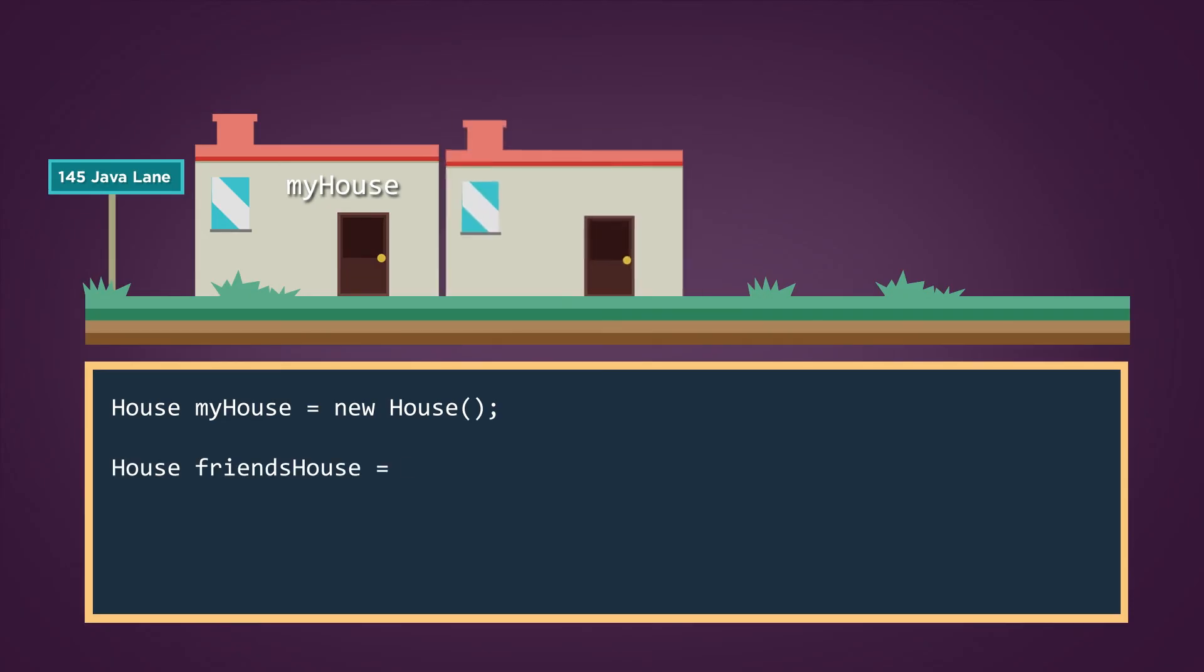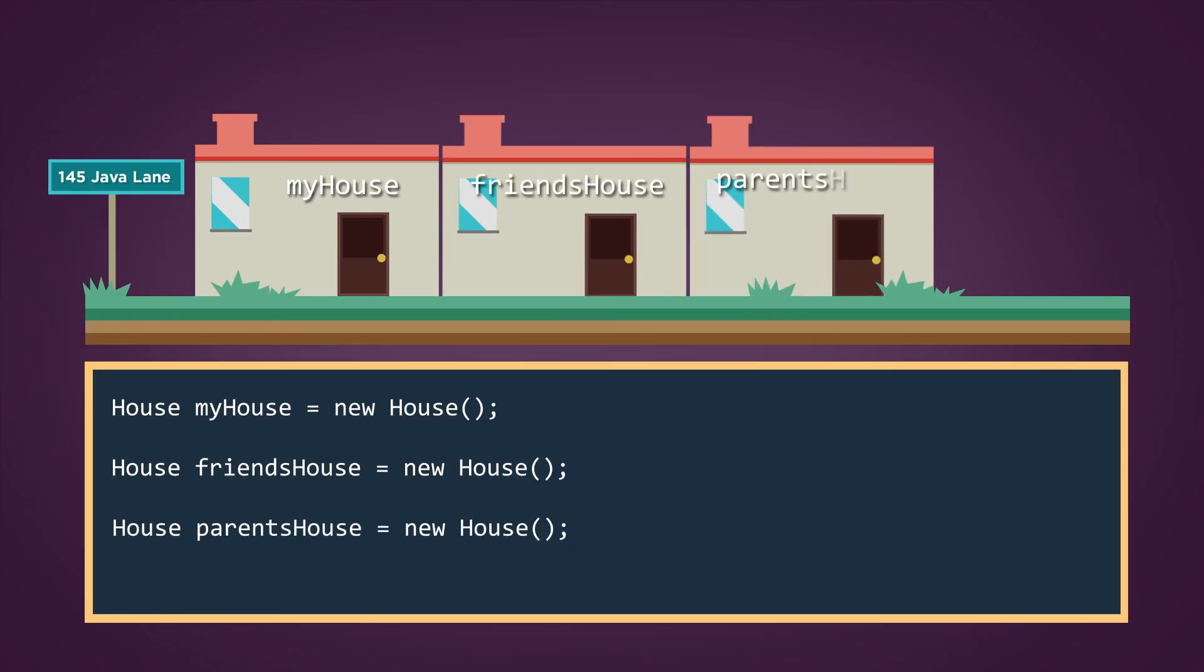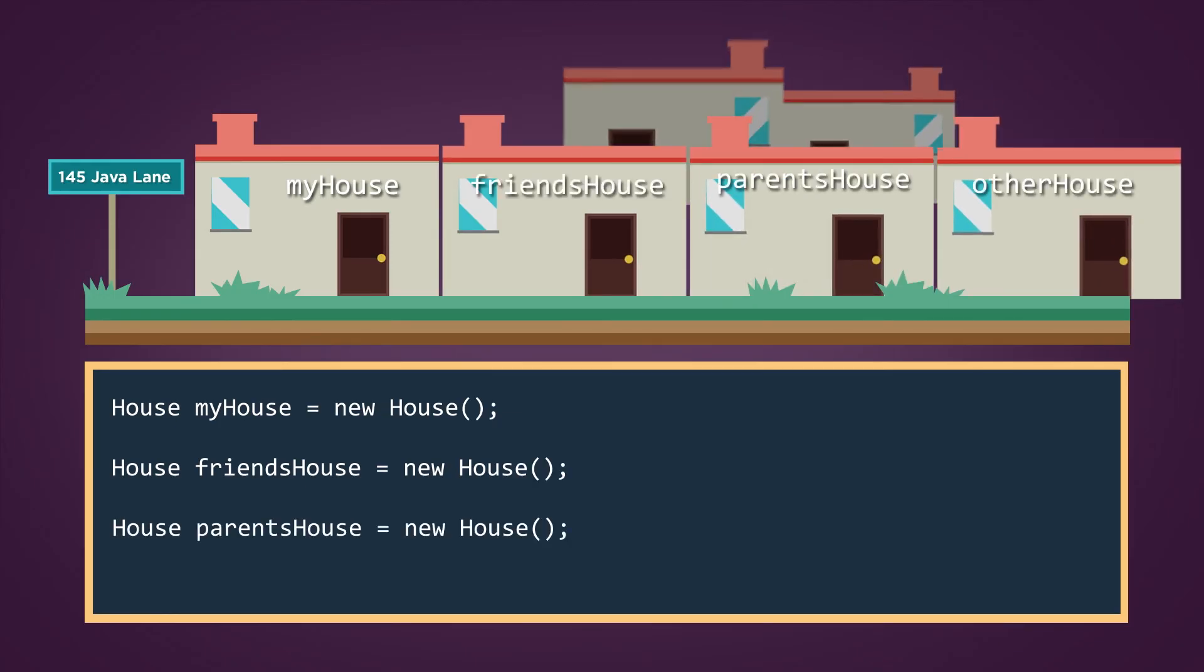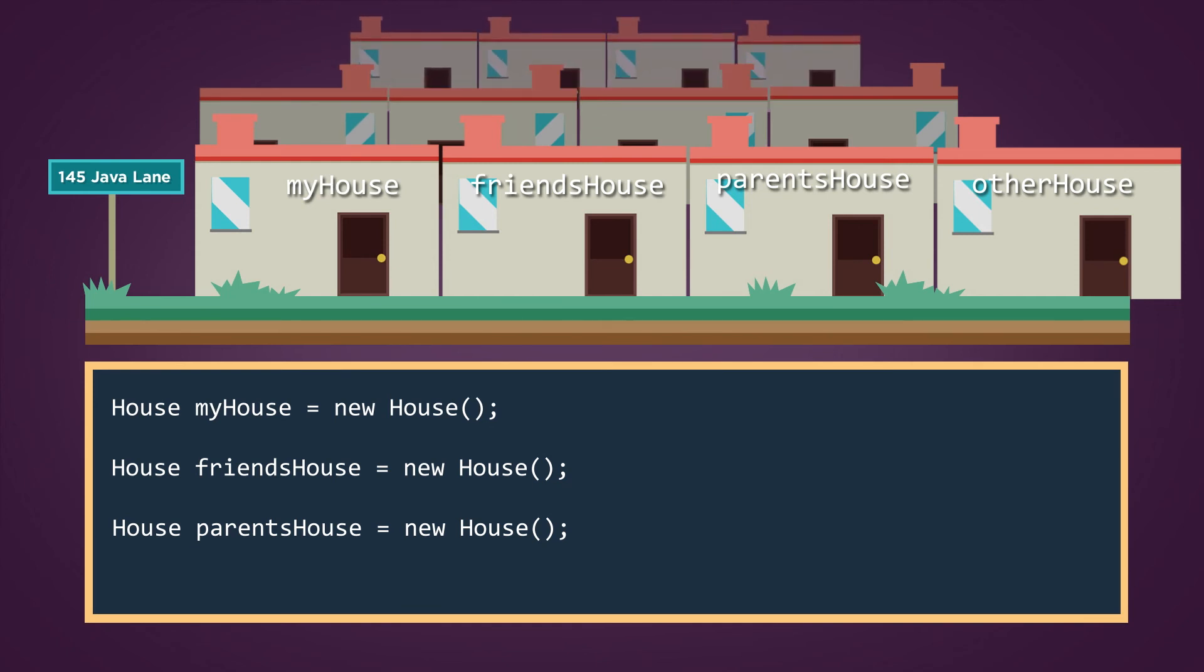I can make a house for my friend or one for my parents or as many other houses as I want. Each of these houses will have their own set of attributes based on the house class.